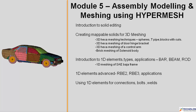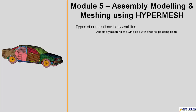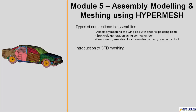You will then move on to types of connections in assemblies. You will learn through assembly meshing of a wing box with shear clips using bolts, spot weld generation using the connector tool, seam weld generation for chassis frame using the connector tool, and an introduction to CFD meshing including CFD meshing of an exhaust manifold.